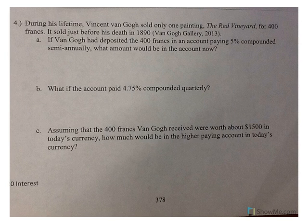And, now, number four. During his lifetime, Vincent Van Gogh sold only one painting, called The Red Vineyard, for 400 francs. It sold just before his death in 1890. Now, if Van Gogh had deposited the 400 francs in an account, paying 5% compounded semi-annually, what would be in the account now?